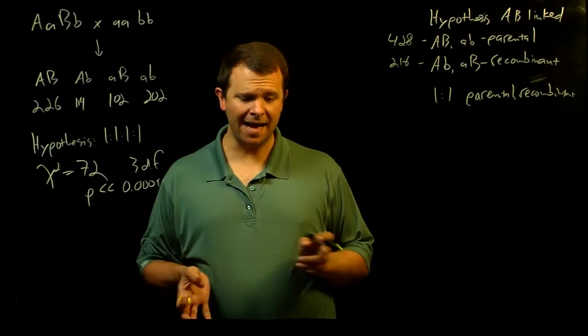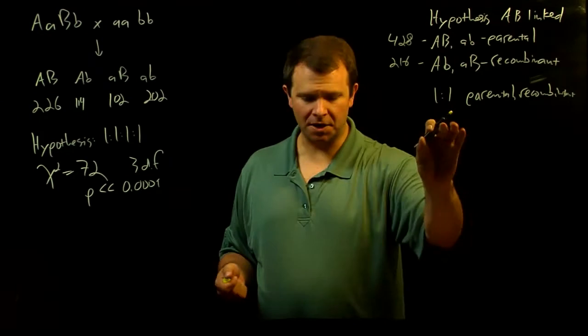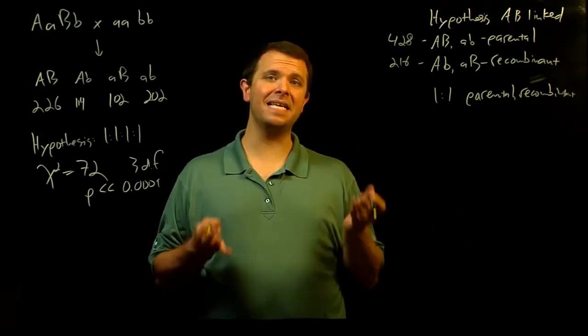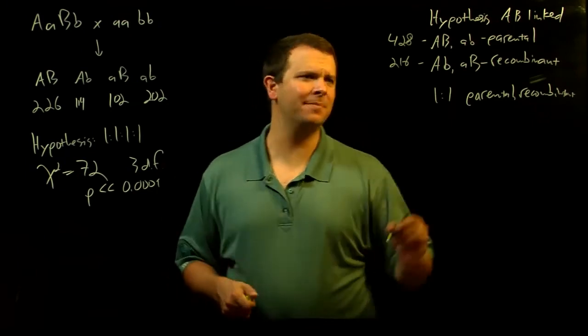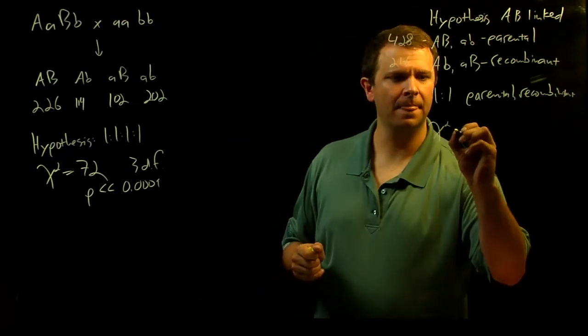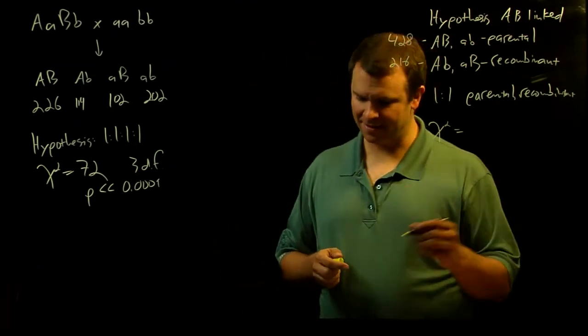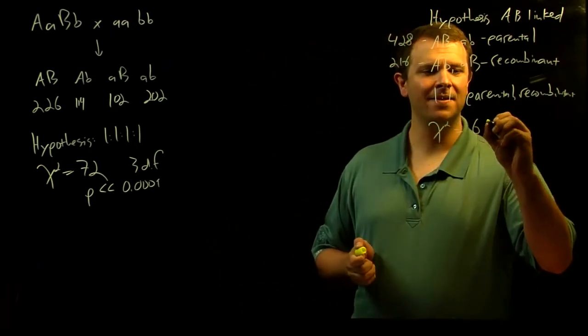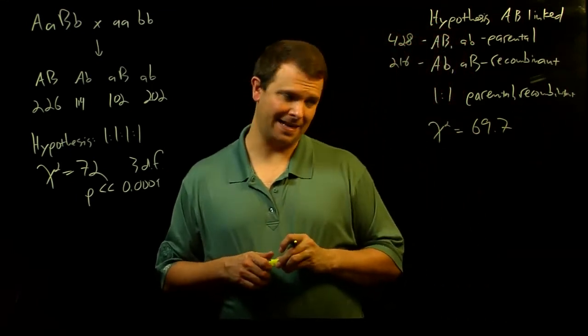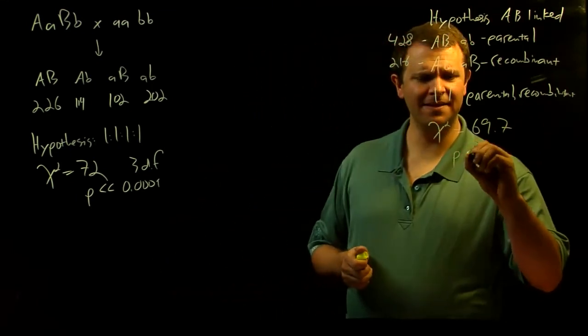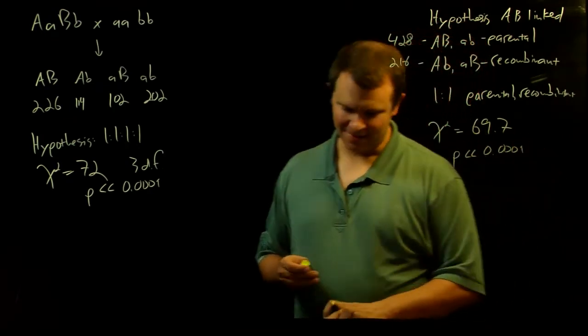And so now our null hypothesis, remember that our genes are unlinked, predicts this one-to-one ratio. And again we can run a chi-squared test. I'm going to elide the math and jump straight to the fact that the chi-squared test statistic is 69.7, which again gives you a p-value that is way, way less than 0.0001.